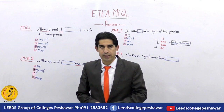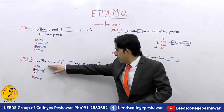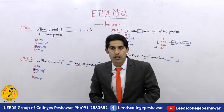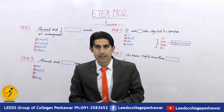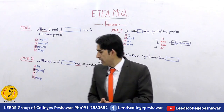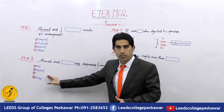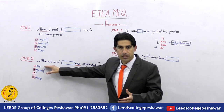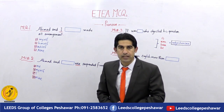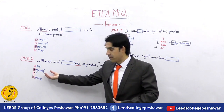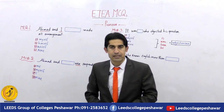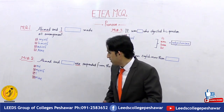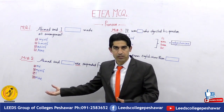Moving on to MCQ number two: 'Ahmad and ___ are suspended from the job.' We do not have the pronoun that we need to link with the auxiliary verb. In the options we have different cases of pronouns: option A, 'me' — the objective case; option B, 'myself' — the reflexive form; option C, 'I' — the subjective or nominative case; and option D, 'my' — the possessive case.